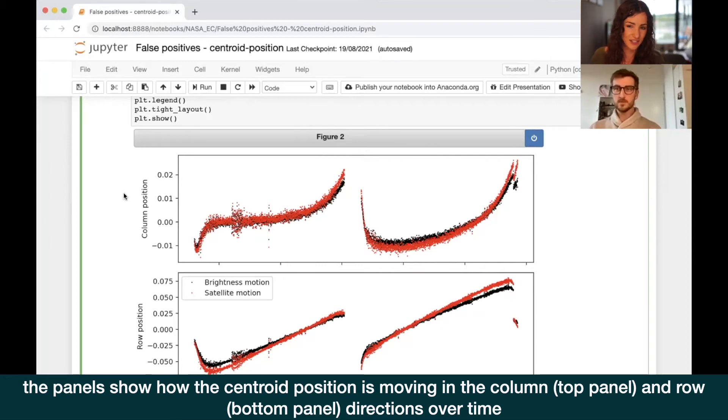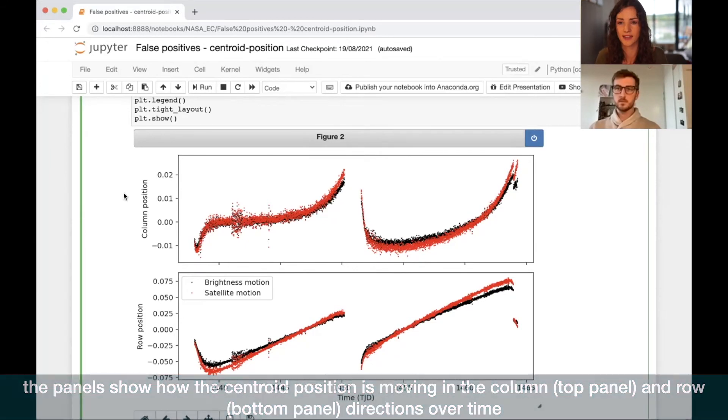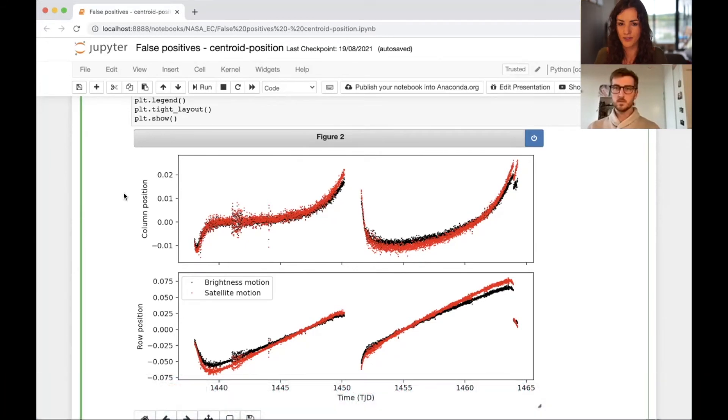So kind of in what direction in the column it's moving. So it's like moving in the X and Y direction. Okay. And the different colours are two different centroid tests. So we have the satellite motion. So this is kind of testing, is the satellite moving? Is there a jolt in the satellite? Kind of those types of effects. These are very useful to rule out systematic false positives due to the instrumentation. And we have the brightness motion. And the brightness motion is the one that we just talked about before. So that's the one that we can use to rule out astrophysical false positives. But as we said, we don't want to look at this on this long-term trend. We want to look at it on a short-term trend.